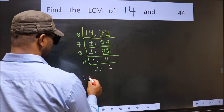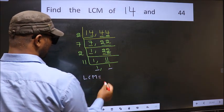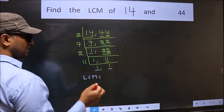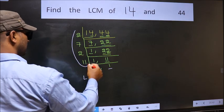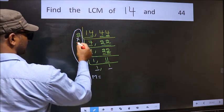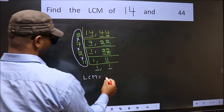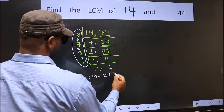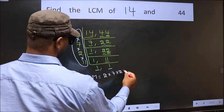So our LCM is the product of these numbers. That is 2 into 7 into 2 into 11.